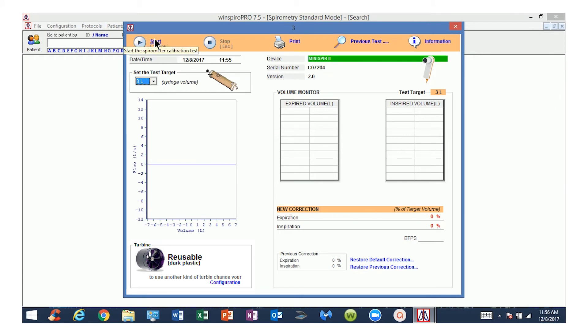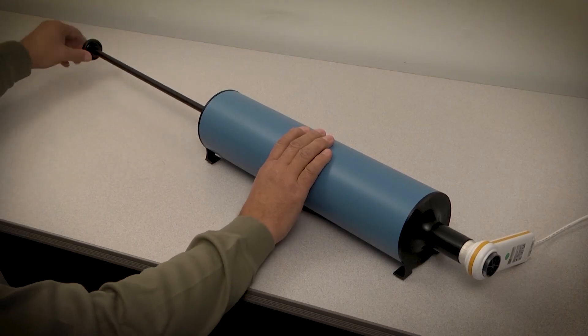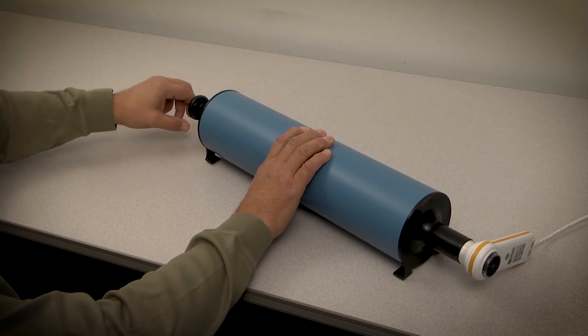Always check to be sure that you have a tight seal and that no air is leaking at the syringe or the turbine. If the results are still outside of the three percent range again, redo the test for a third time, again checking to be sure you have a tight seal and that no air is leaking. Be sure to pull and push the syringe piston all the way to the built-in stops in each direction.